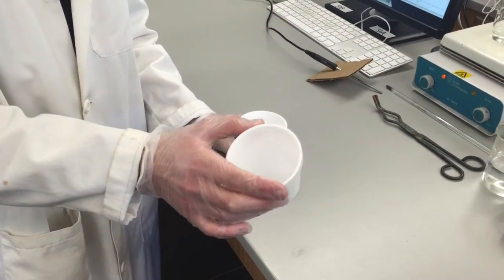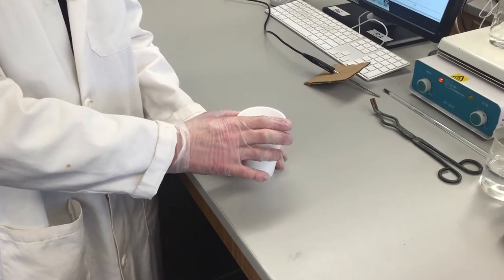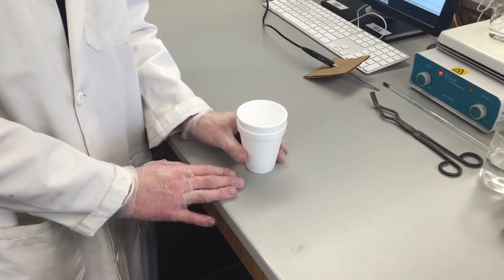The next thing you want to do is assemble your calorimeter. You will stack two styrofoam cups on top of one another which will insulate your system.